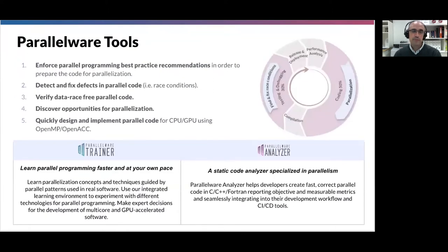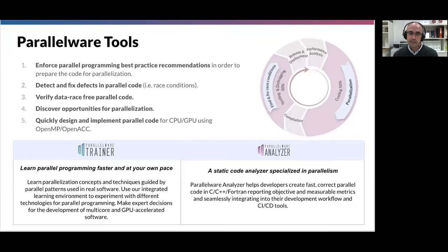Parallelware tools consist of two tools: Trainer and Analyzer. Looking at the wheel on the right-hand side, you can see we are representing the iterative process you need to follow to go from sequential code to a fully parallel code running fast on the CPU and the GPU. You need to go through two key stages several times: testing and debugging, and coding parallel versions.